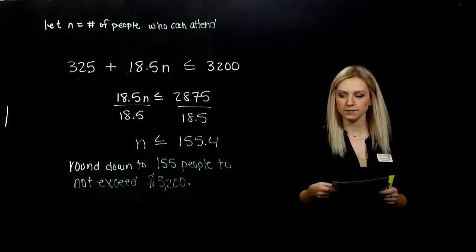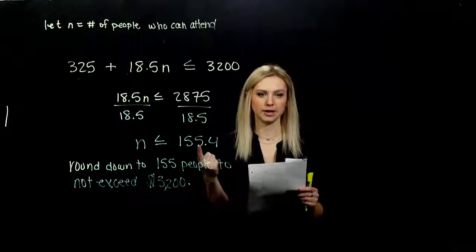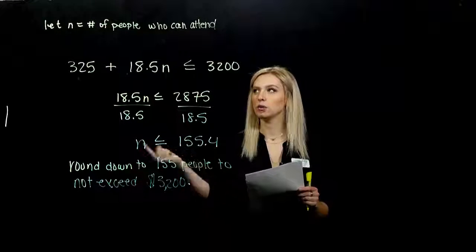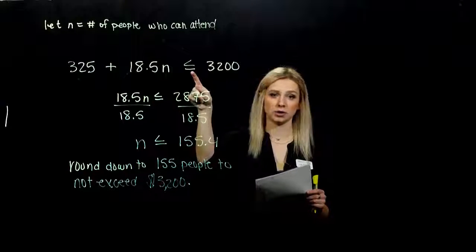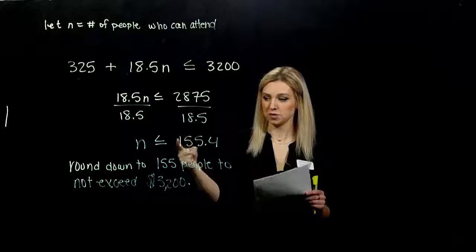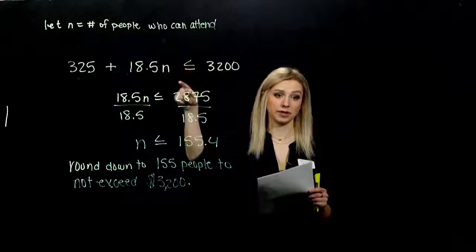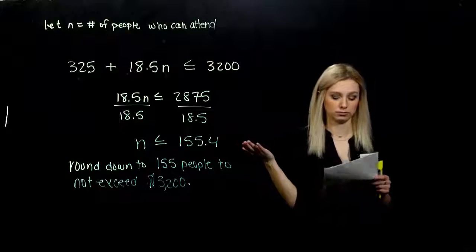And if you weren't certain that this was correct, if maybe you rounded up instead to 156, you can always plug it back in to your original equation that you wrote. Make sure that it actually holds true that it's going to be less than or equal to $3,200. If you pick 156, it's going to be larger than and it's going to fail. So in that case, you would know, oh, I need to round down. Nice.